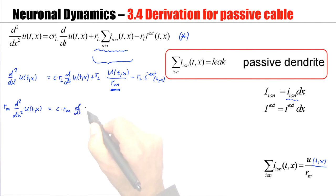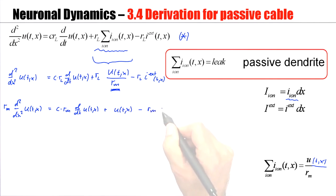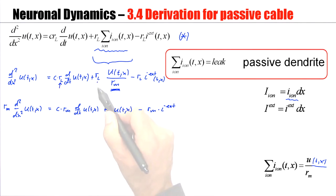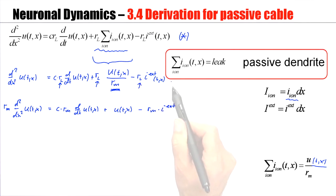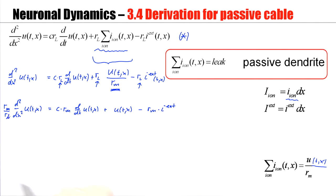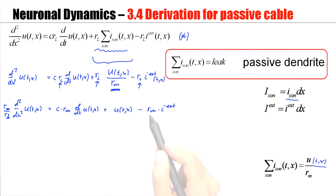Now let's multiply this equation by rm and divide by rl at the same time. I move terms to the other side, giving rm times d/dT of u(t,x), plus u(t,x). The rl — the longitudinal resistance — has disappeared from these terms.